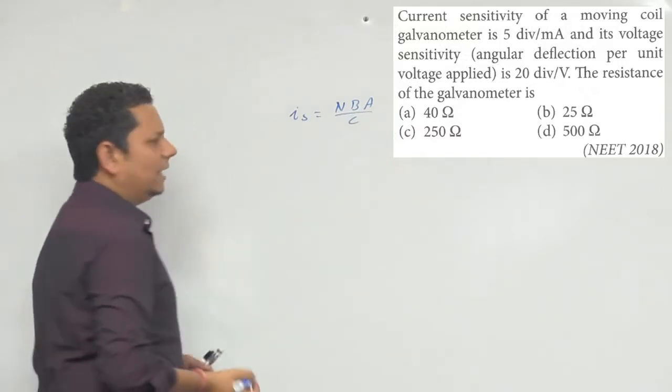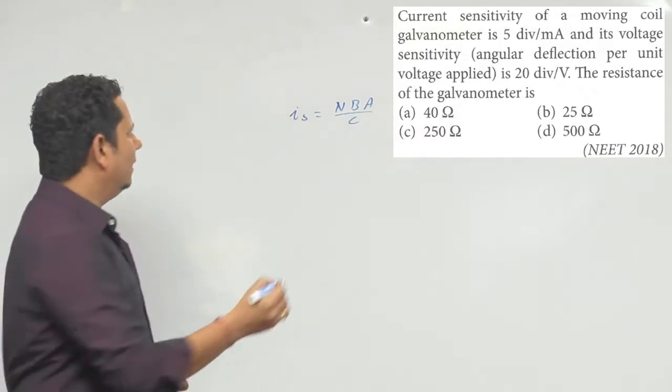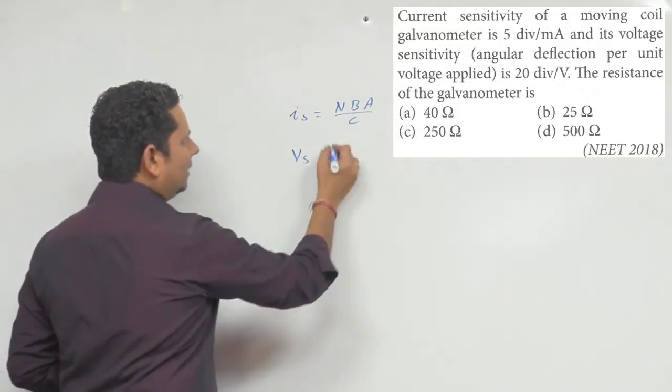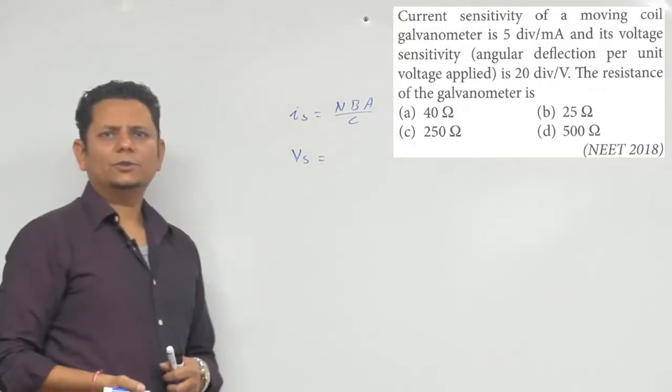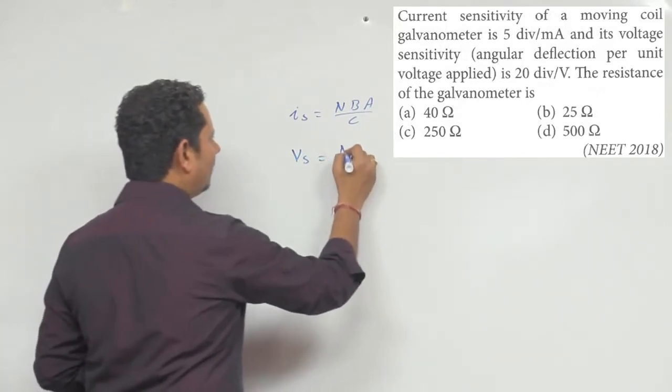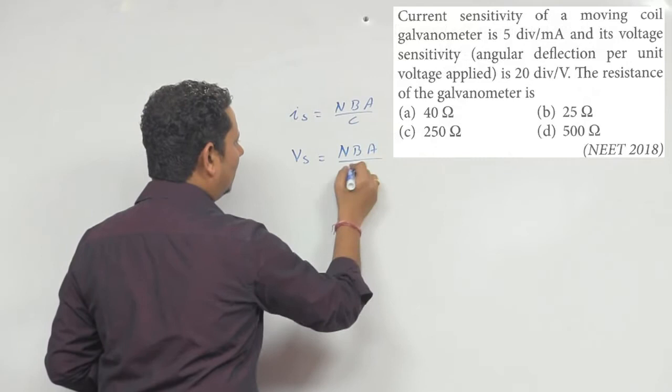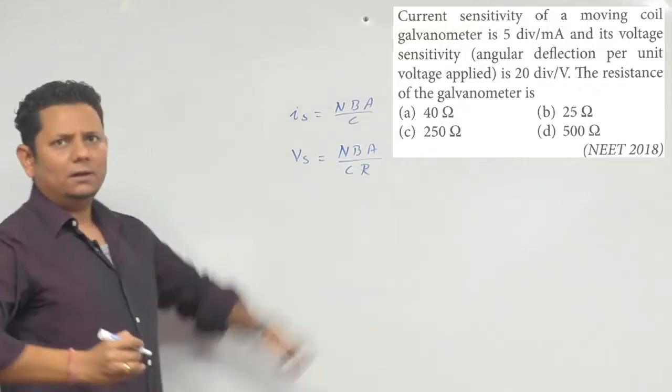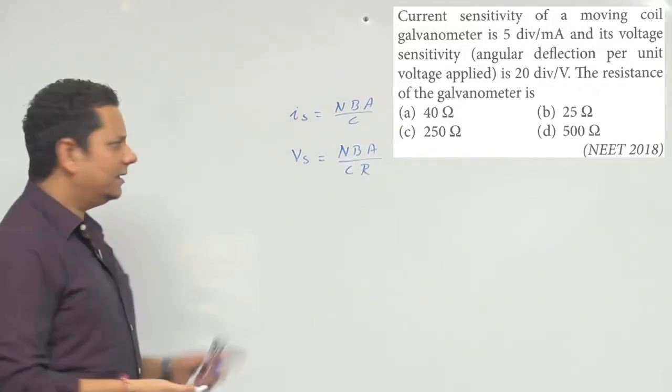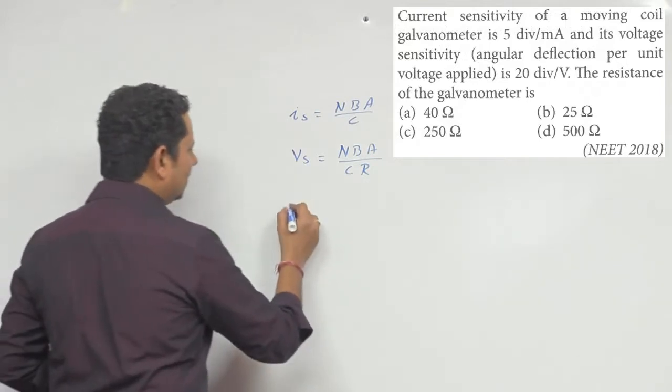Similarly जो voltage sensitivity की बात करते हैं, उसको हम लिखते है nba divided by cr, यह आपका voltage sensitivity आती है. अगर हम galvanometer के resistance की बात करें तो R जो आएगा वो actually इन दोनों को divide करके value आजाएगी.